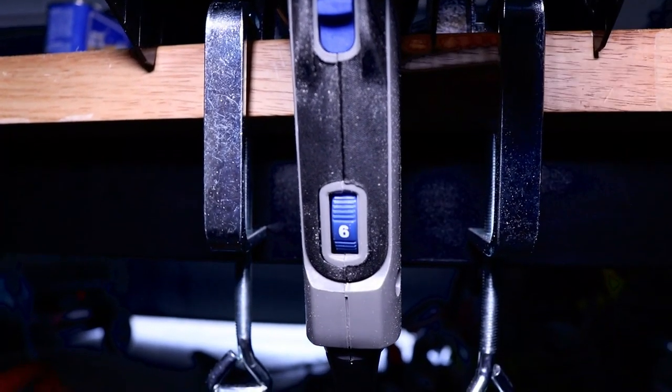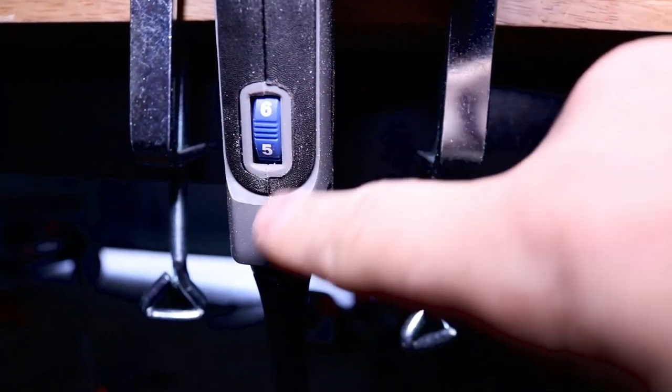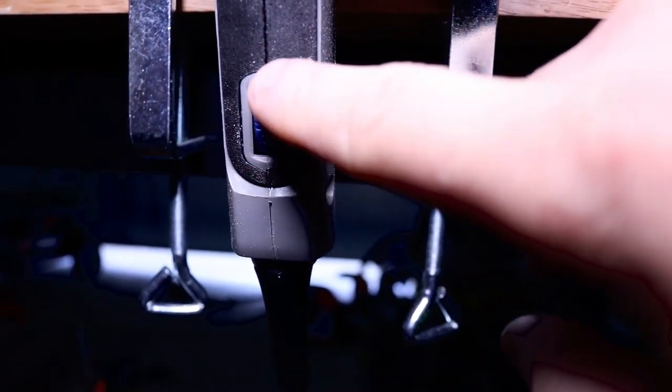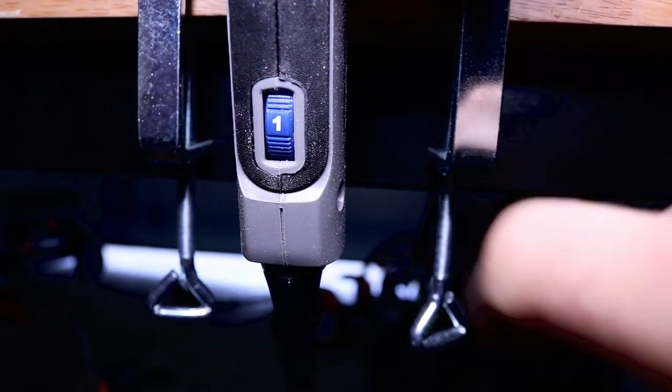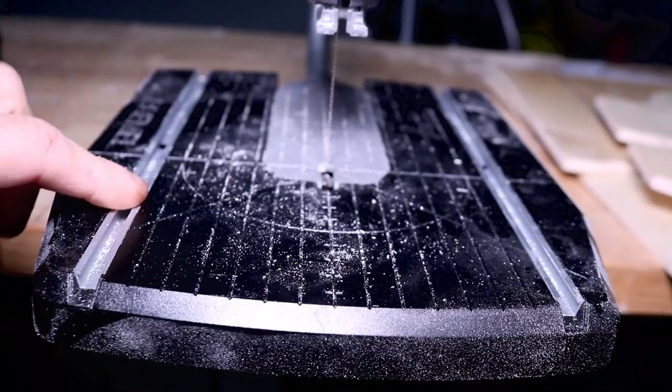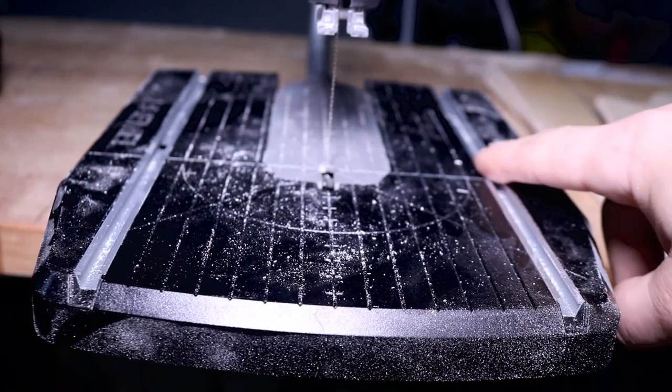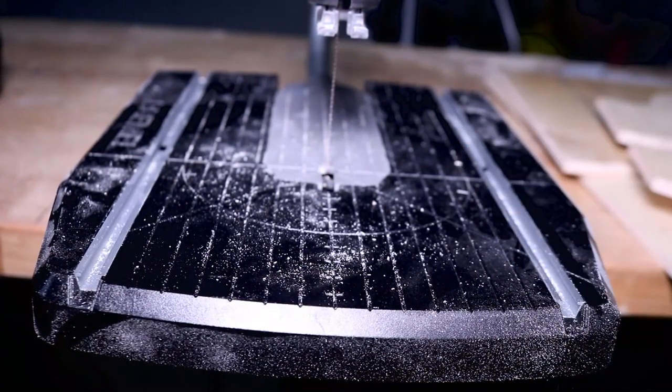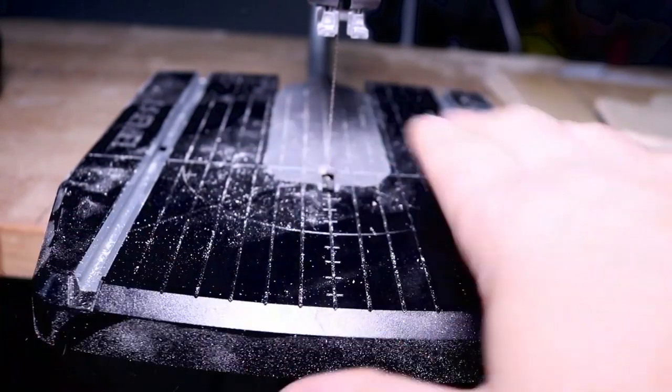The adjustment speed wheel goes from one to six. The problem is, is that it really wasn't efficient on anything else but the highest setting of six. Unless you were just trying to clean up an edge or just had to go through something very, very soft. Well, there's really no benefit of running it that slow.